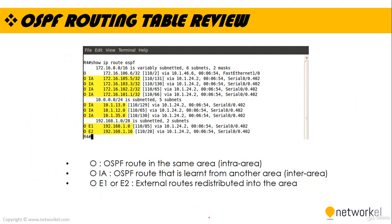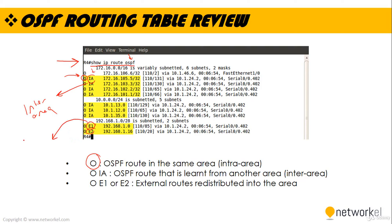Now let's review the OSPF routing table. To display OSPF routes for Router 4, we type 'show ip route ospf'. We have some entries with keywords such as 'O' and 'IA'. 'O' means OSPF, 'IA' means inter-area. We can also see 'E1' and 'E2', which represent external routes redistributed into the area.